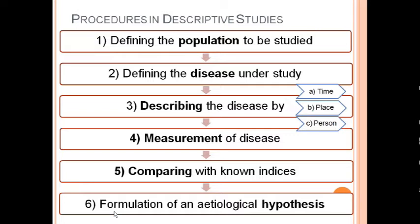Remaining procedures include comparing with known indices to know whether the frequency is increased or decreased, whether it is endemic, epidemic, or pandemic, and whether it follows a seasonal trend or is increasing or decreasing over time. Finally, there is the formulation of an etiological hypothesis. These are the procedures that come under descriptive studies.